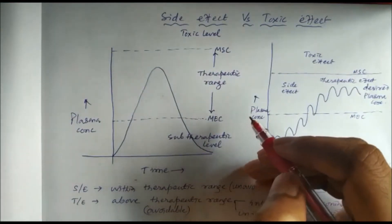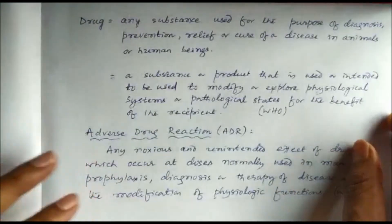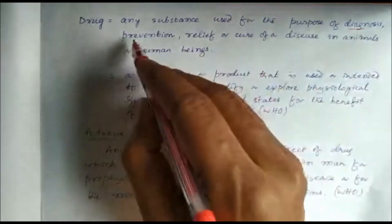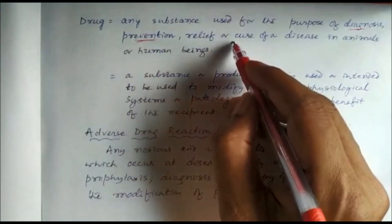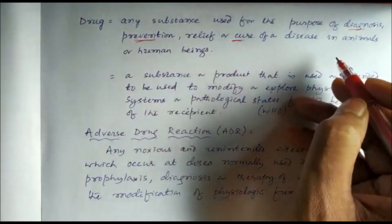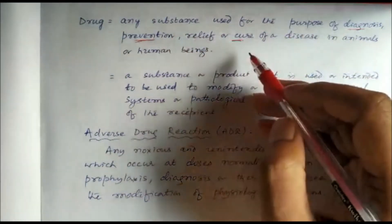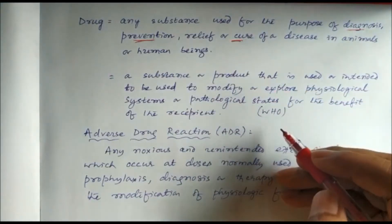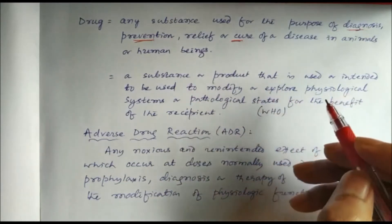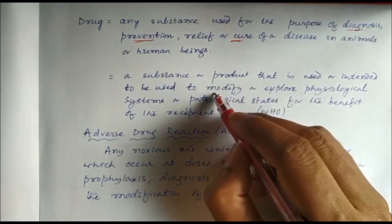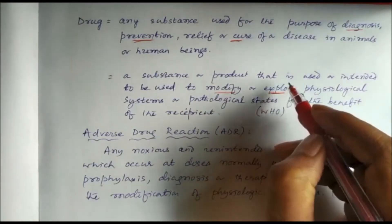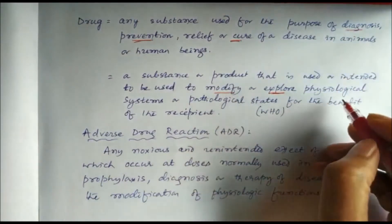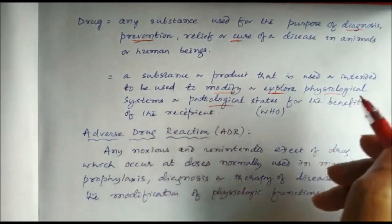First, let us discuss what is a drug. A drug is any substance used for the purpose of diagnosis, prevention, and cure of a disease in animals or human beings — three aspects. As per the World Health Organization, a drug is a substance or product that is used or intended to be used to modify or explore, where 'explore' covers the diagnosis part.